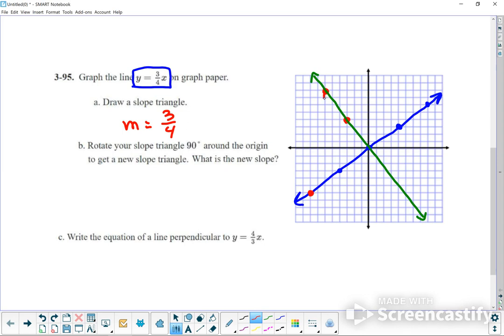And my new slope is going to be down 1, 2, 3, 4, and over 1, 2, 3. So rotate this around the origin to get a new slope triangle. What's a new slope? So this new slope will be down 4 and over 3. And you can see that there's a similarity between these two. Write the equation of a line perpendicular to this. So the equation of this line is going to be y equals mx plus b. And the m we know now is going to be negative 4 over 3x.